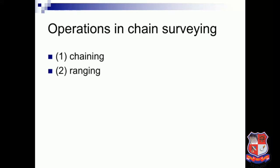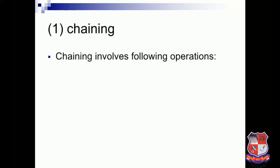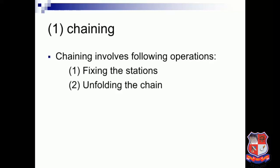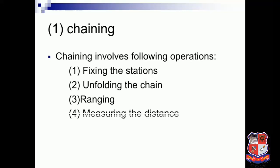The operations in chain surveying are: chaining, ranging, and offsetting. Chaining involves the following operations: fixing the station (e.g., from A to B), unfolding the chain, arranging, measuring the distance, and folding the chain again.